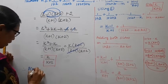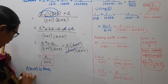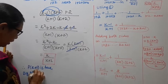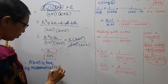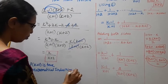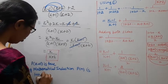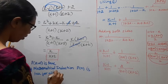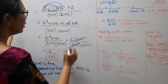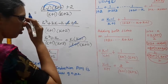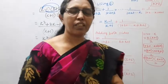Therefore P(k+1) is true. By mathematical induction, P(n) is true for all values of n greater than or equal to 2. This channel helps you to get 100 marks — please subscribe.